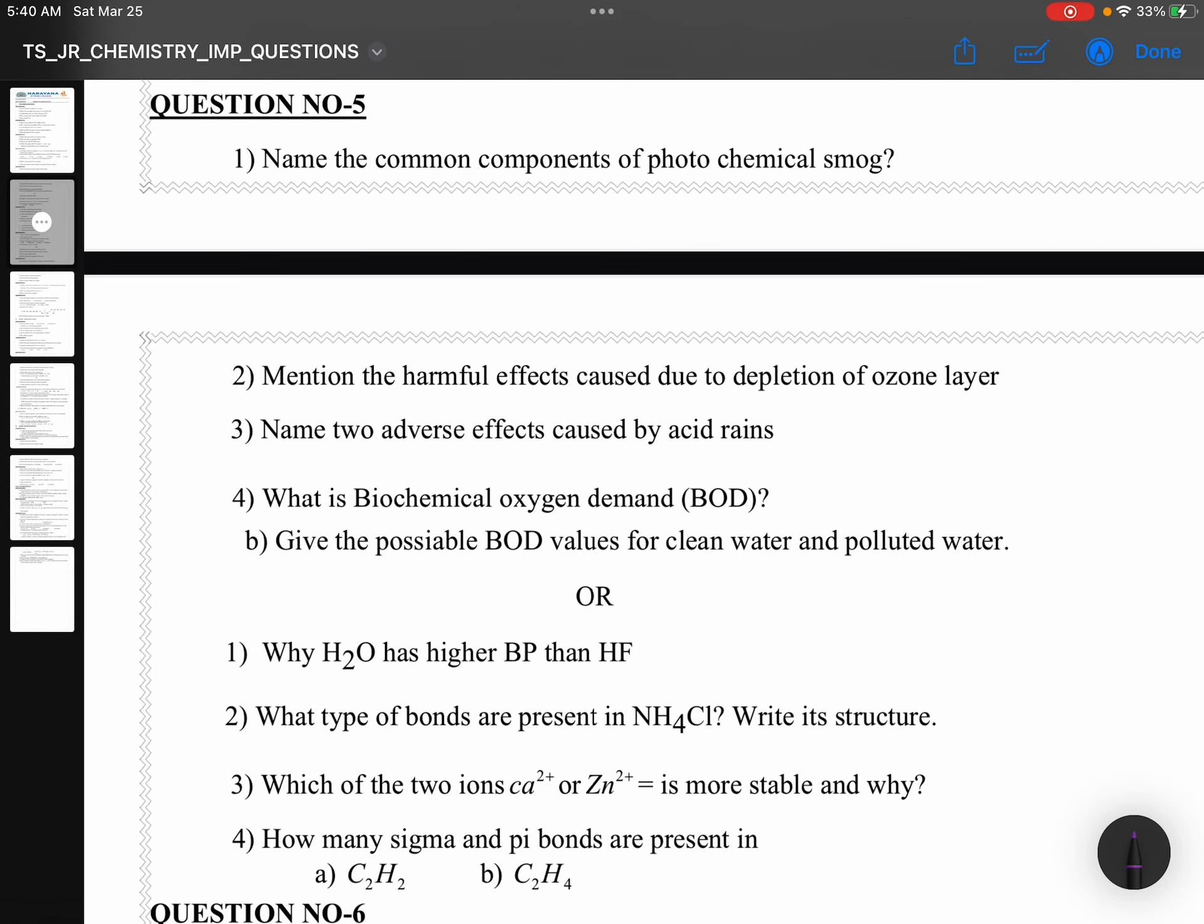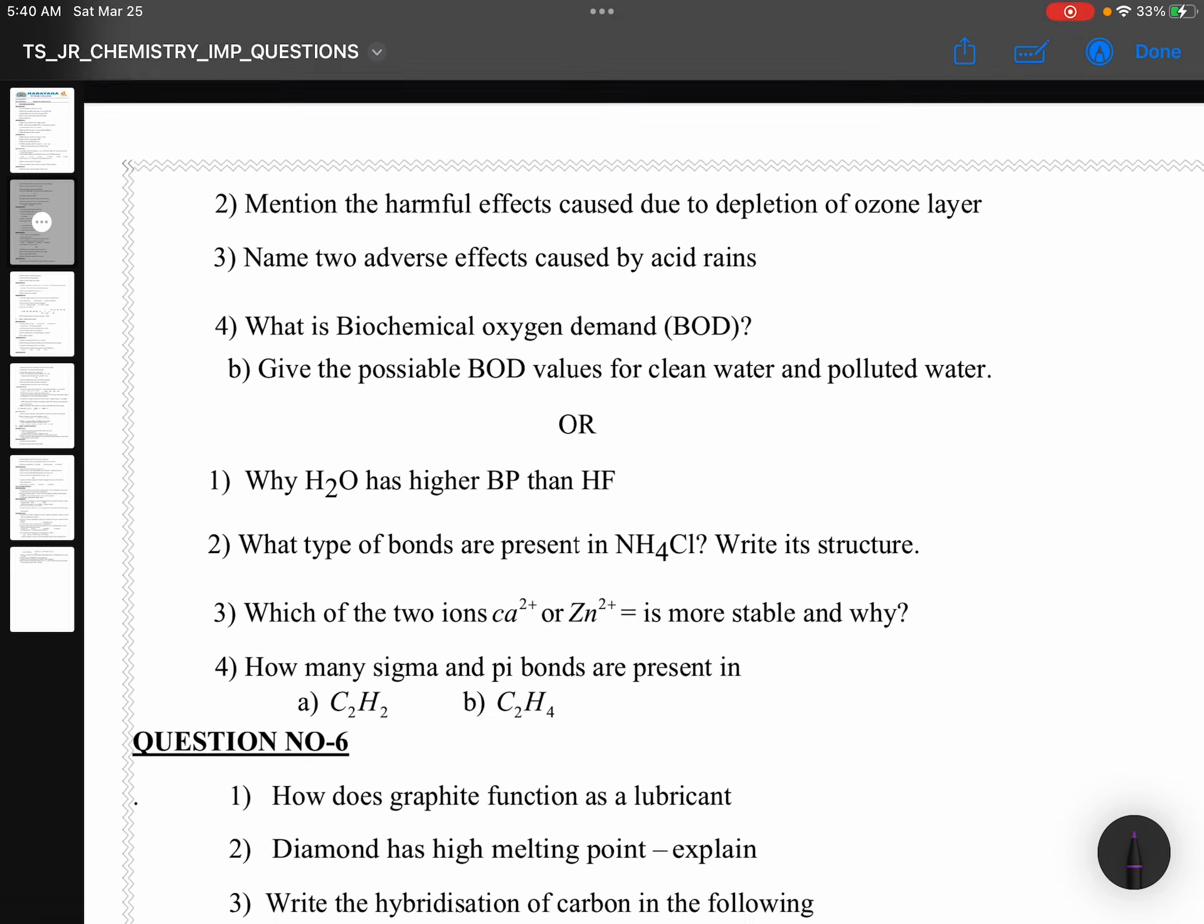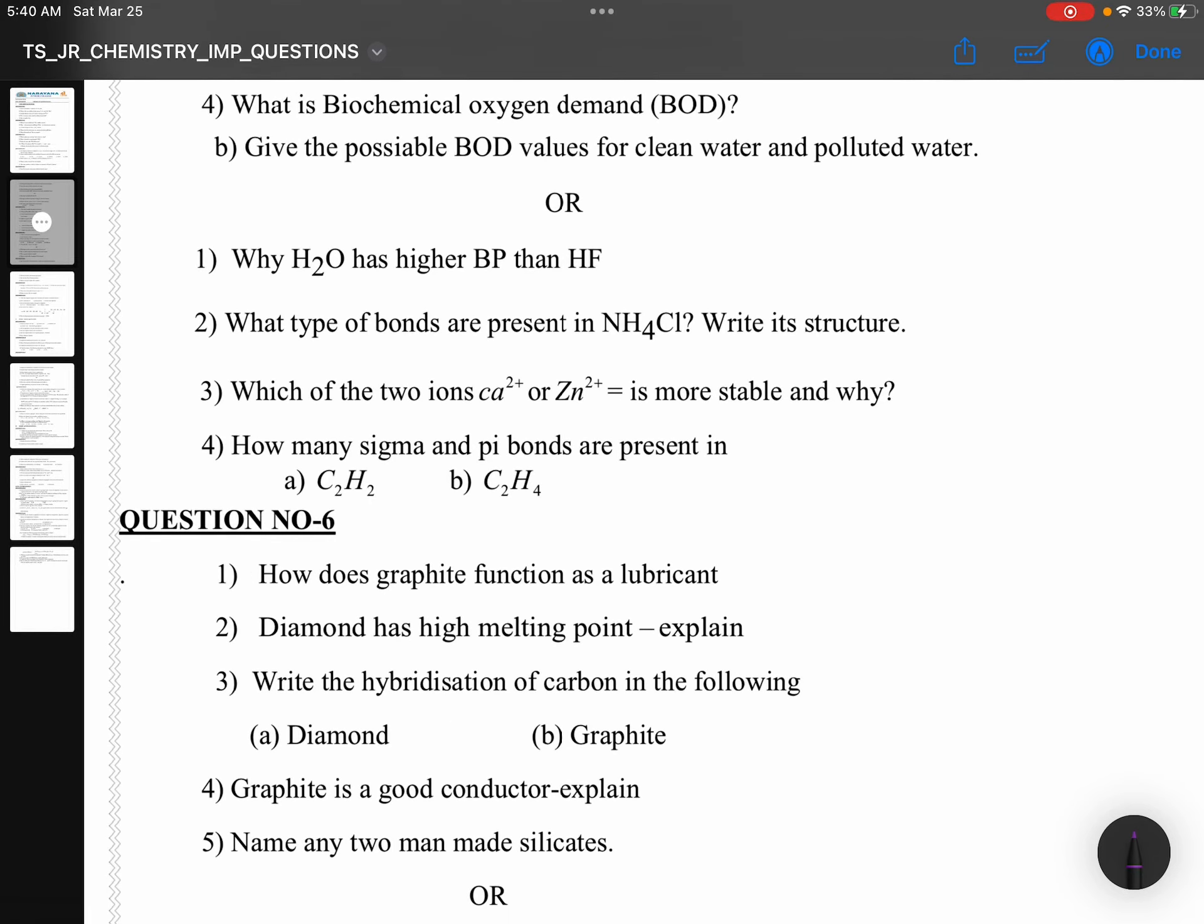Photochemical smog, depletion of ozone layer, adverse effects caused by acid rains, BOD. Or, why water has higher boiling point than HF? What type of bonds are present in NH4Cl? Which of the two ions, calcium plus 2 or zinc plus 2 is more stable and why? How many sigma and pi bonds are present in C2H2 and C2H4? So, it is like mixing, like chemical bonding or environmental chemistry.